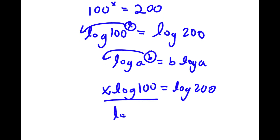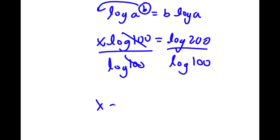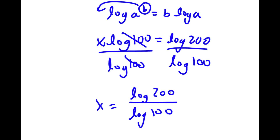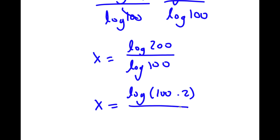Now if I have something in the form log a to the power of b, I can move b to the front, so this equals b times log a. In this case I move x to the front, so I have x times log 100 is equal to log 200. Now if I divide both sides by log 100, these cancel out and I have x is equal to log 200 over log 100. Now 200 is the same thing as log of 100 times 2, over log 100.